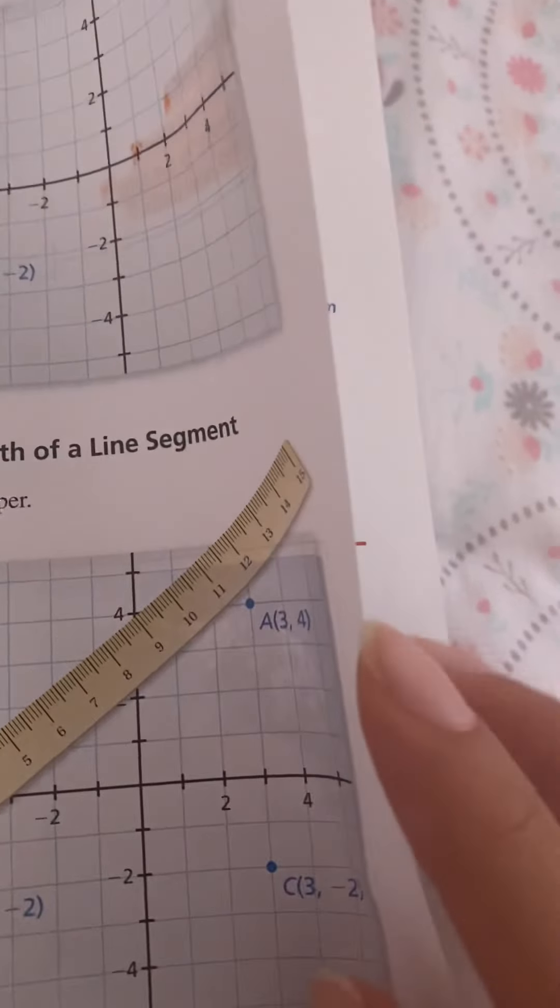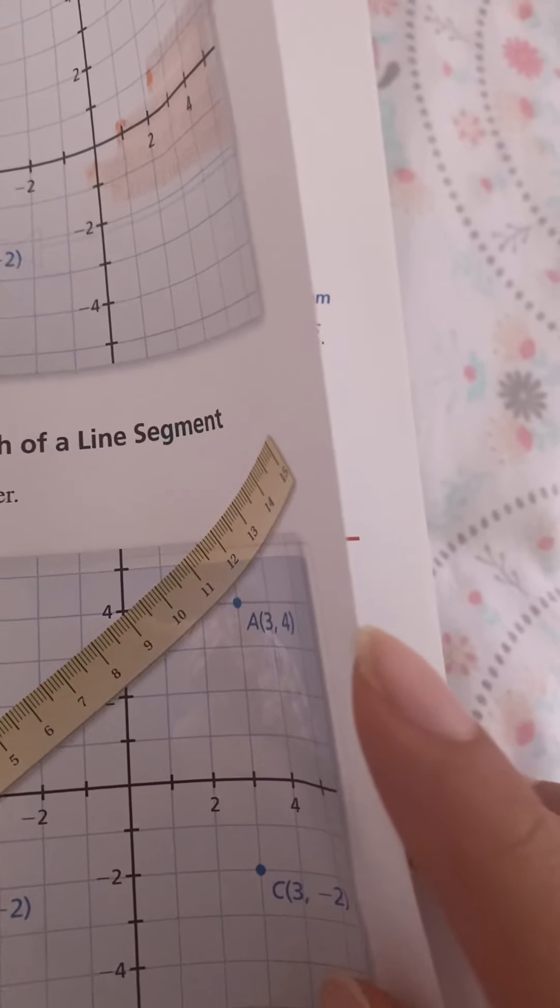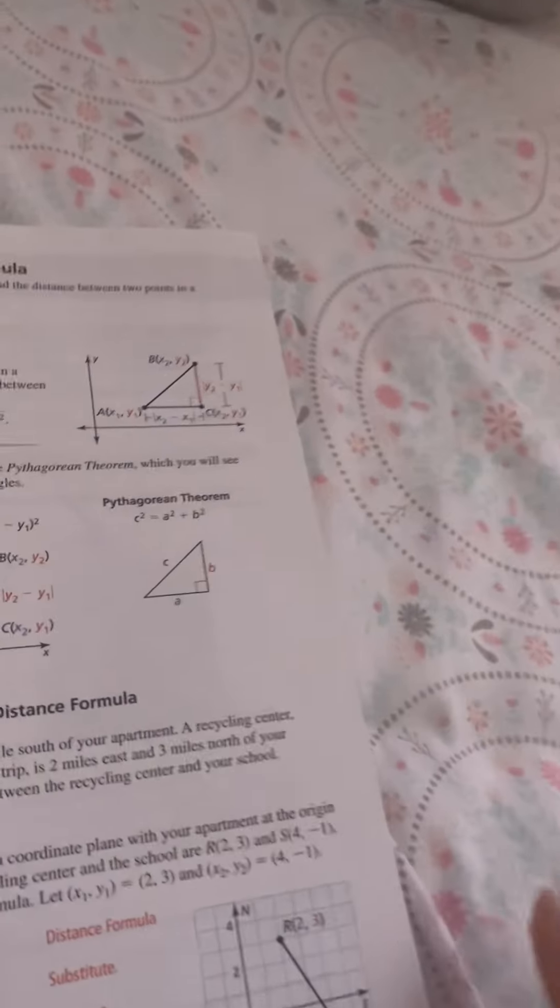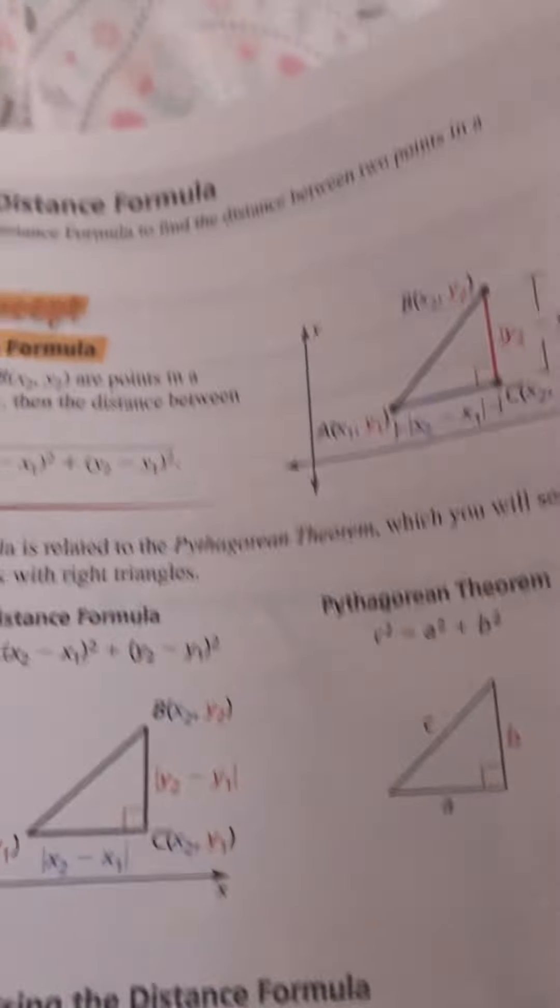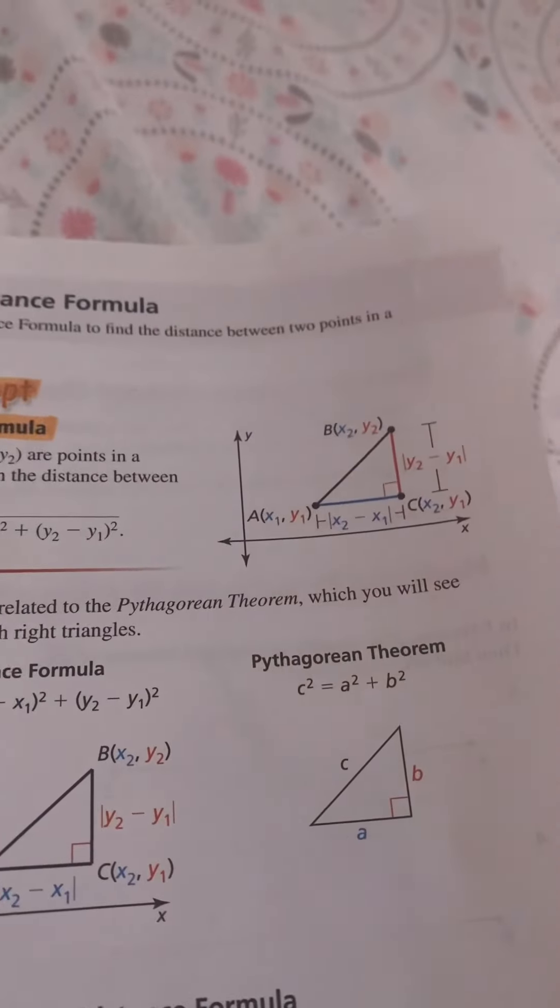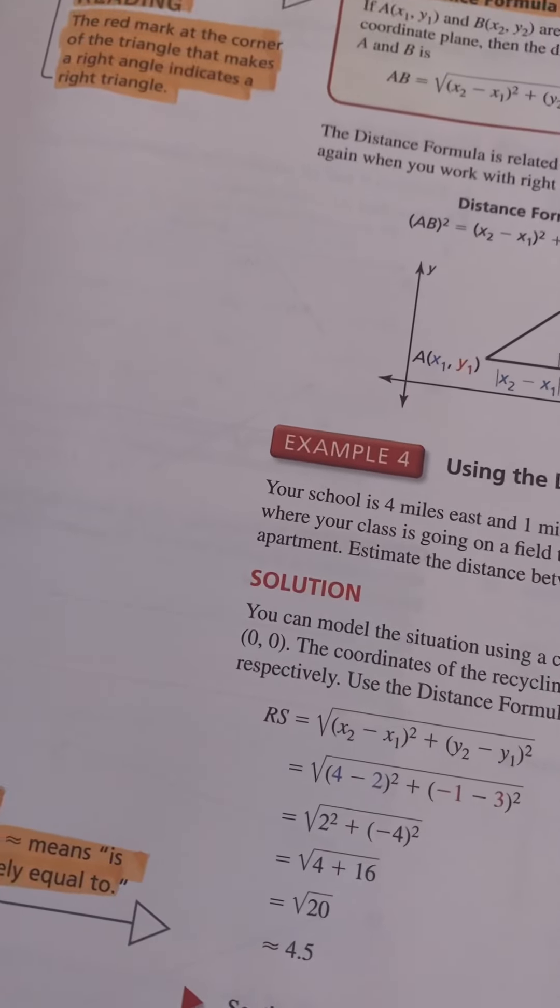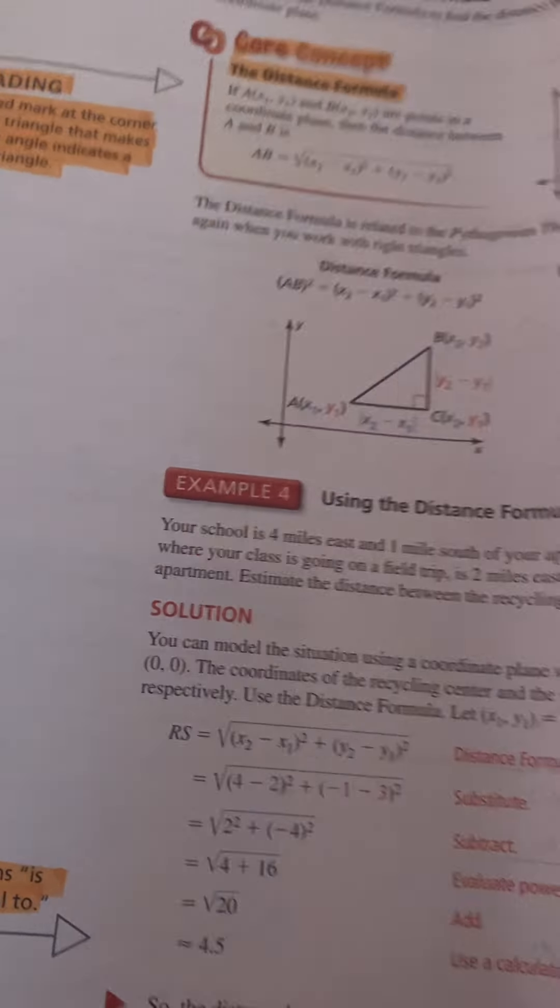1.3 Using Midpoint and Distance Formulas: Making Sense of Problems. To be proficient in math, you need to check your answer and continually ask yourself, does this make sense? Reading: The word bisect means to divide into two equal parts. The red mark at the corner of the triangle indicates a right angle. The symbol ≈ means approximately equal to.